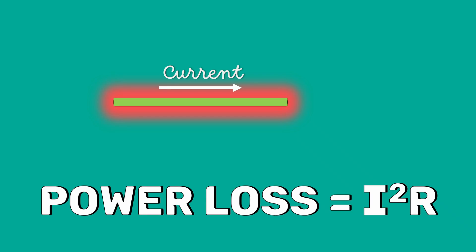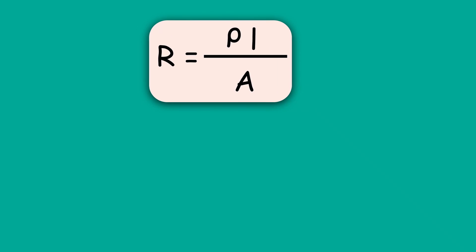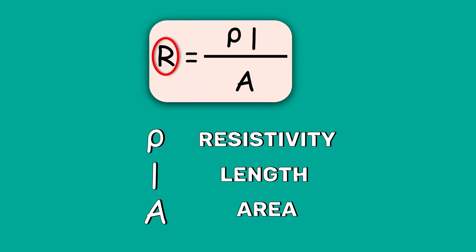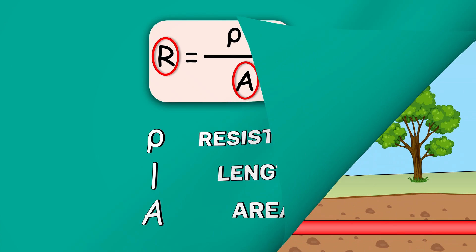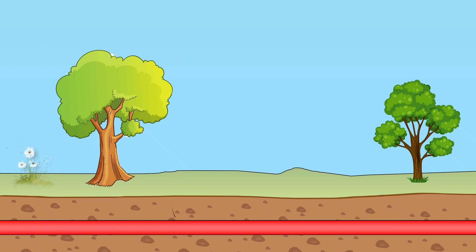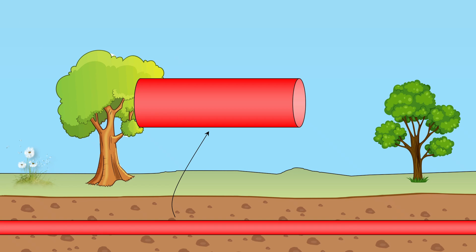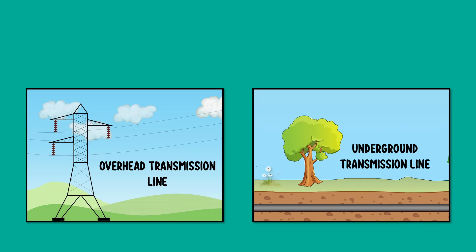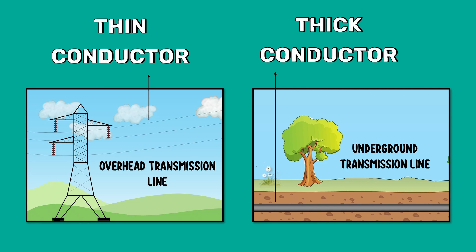In other words, we have to reduce the I²R losses. To achieve this, we have to reduce the resistance of the conductor. We know that R = ρL/A, which means to reduce the resistance, we have to increase the area of cross-section of the conductor. Therefore, for the same current rating, underground cables require larger conductors to prevent overheating. This means underground transmission lines should be thicker than overhead transmission lines, so we cannot use the same line for both.